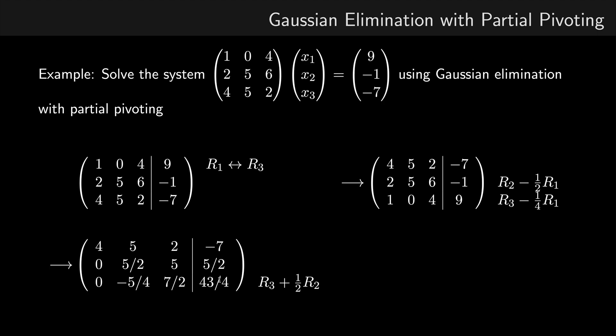So the row operation I need to perform, if I divide 5 over 4 by 5 over 2, we get 1 half. And if I add 1 half multiplied by row 2 to row 3, we reduce this minus 5 over 4 to 0. So now we have our augmented matrix in row echelon form. And this is done using partial pivoting.